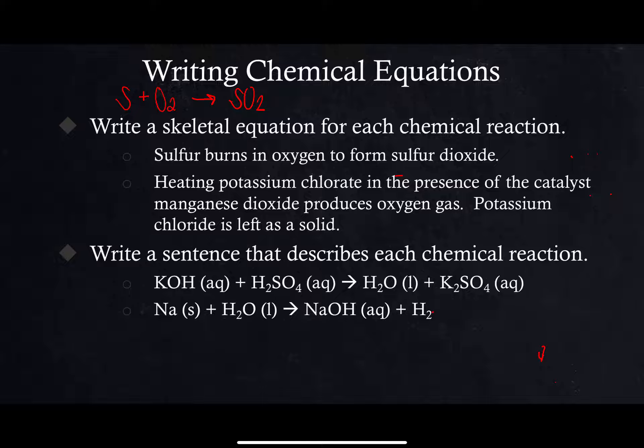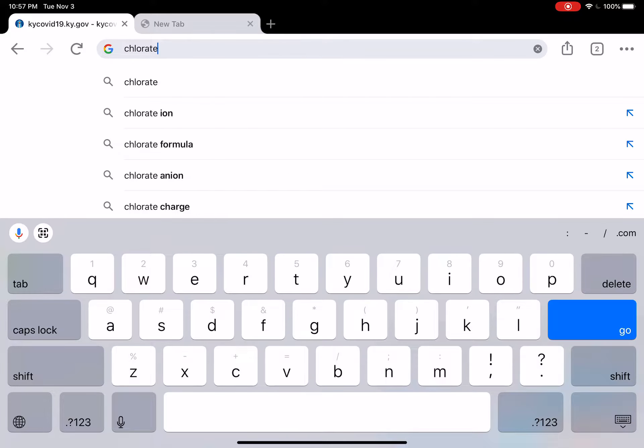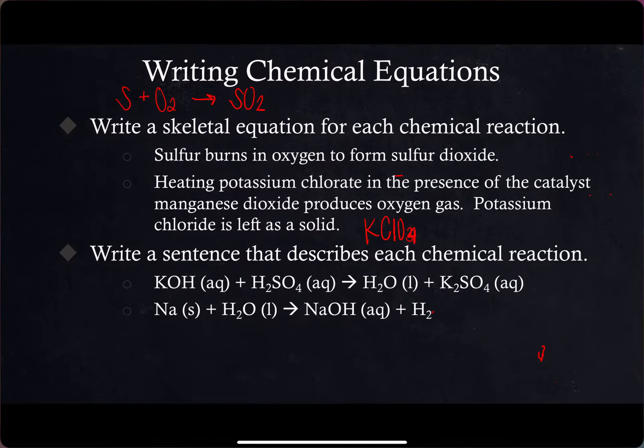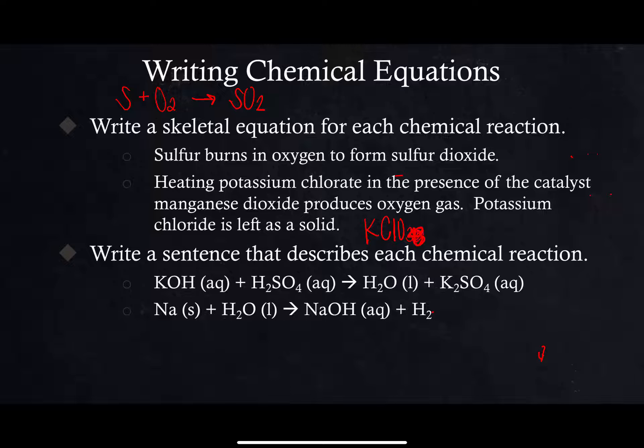The next one, heating potassium chlorate. Chlorate is ClO3. KClO3 in the presence of the catalyst manganese dioxide produces oxygen gas O2 and potassium chloride KCl is left as a solid. That's how we would write that one, that one's a little more difficult. Heating potassium chlorate in the presence of a catalyst.